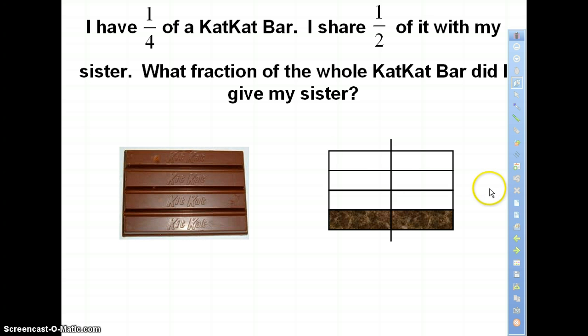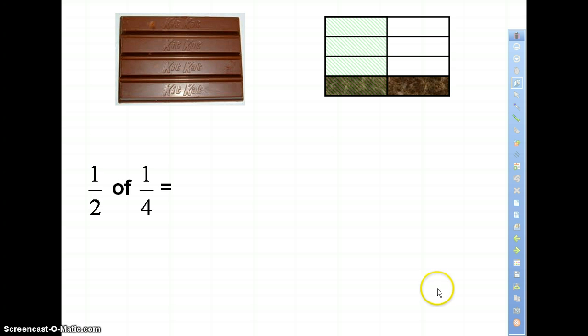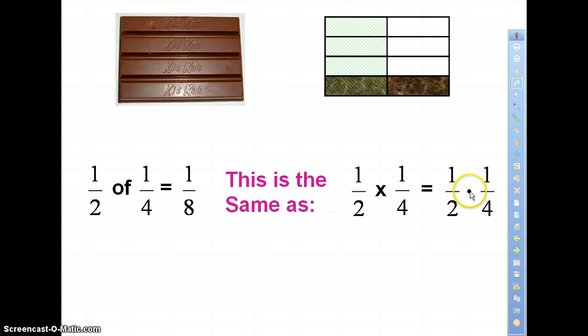Now of that one-fourth, I gave her half. Let's divide the whole KitKat bar in half going vertical. The overlap of that shading of half the bar and the one-fourth I started off with is how much I gave my sister. Well, I've divided the whole KitKat bar into eight equal pieces, and I gave her one-eighth. So this is the same as saying what is one-half times one-fourth. Let's use that little dot because we're headed to algebra. We're gonna take tops times tops and bottoms times bottoms, and we get one-eighth.